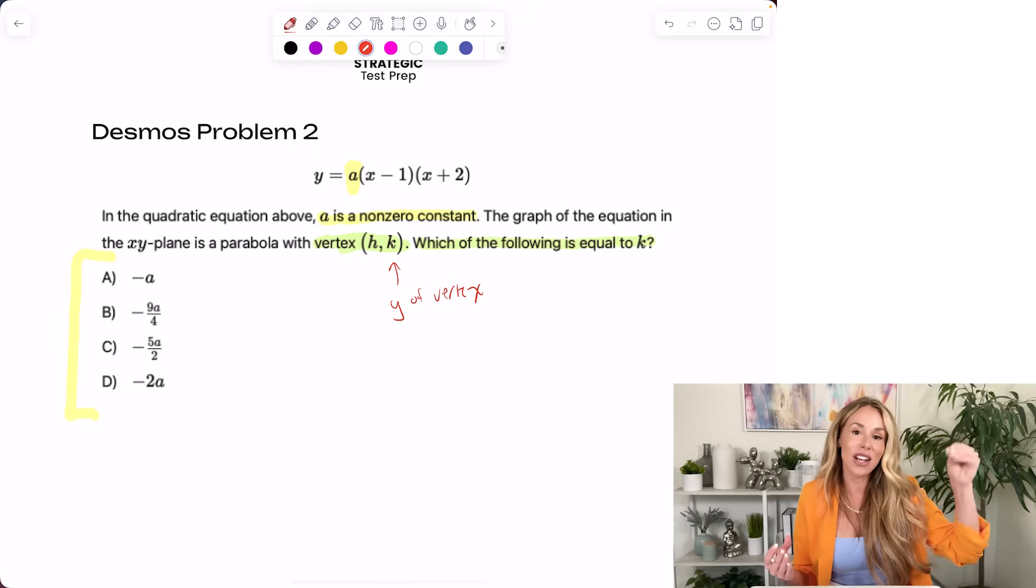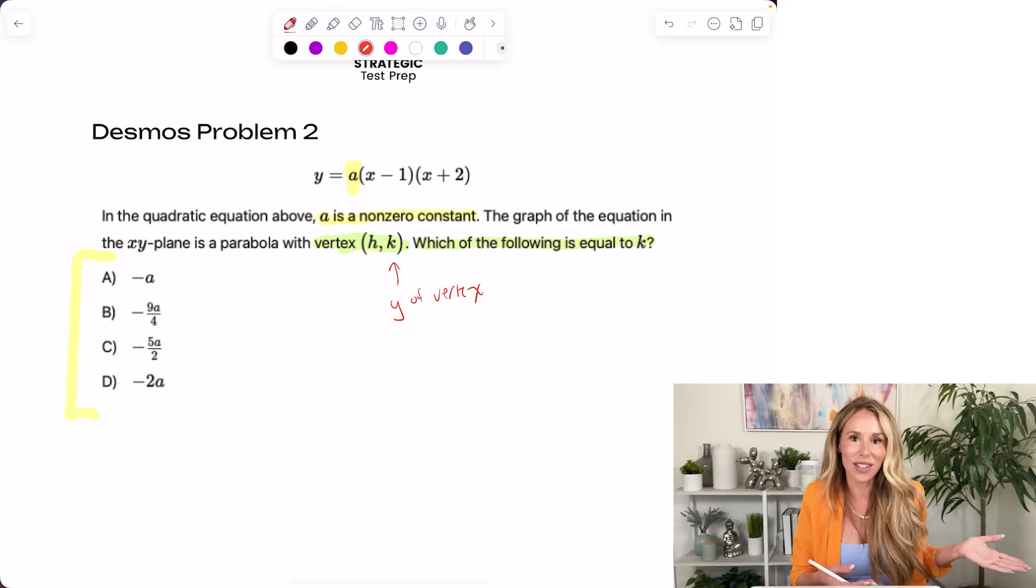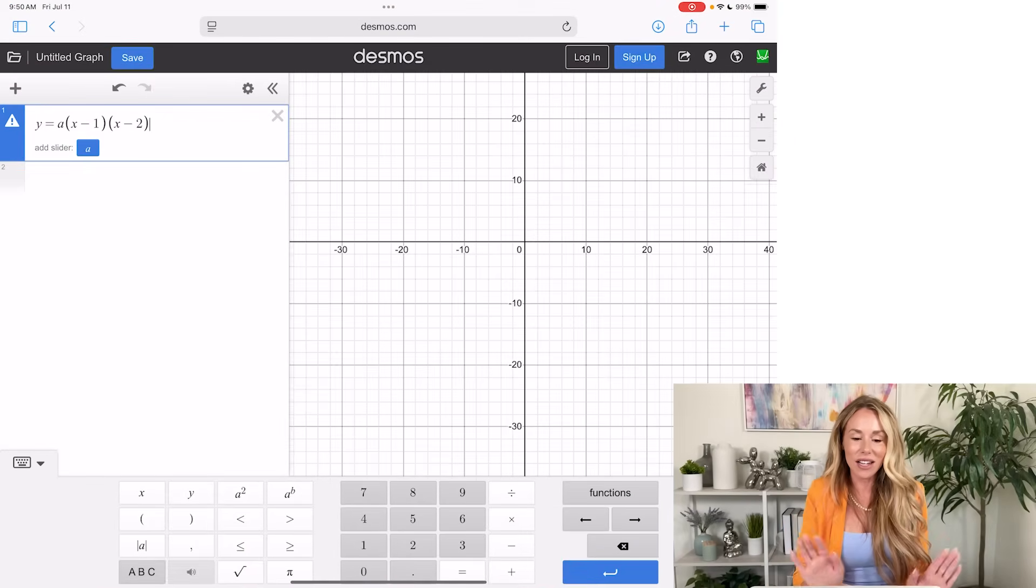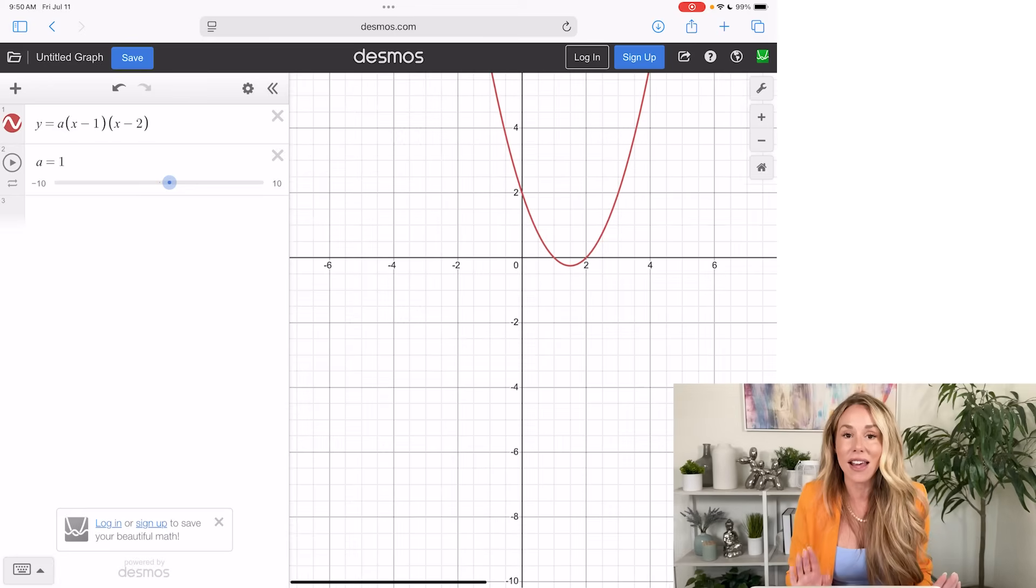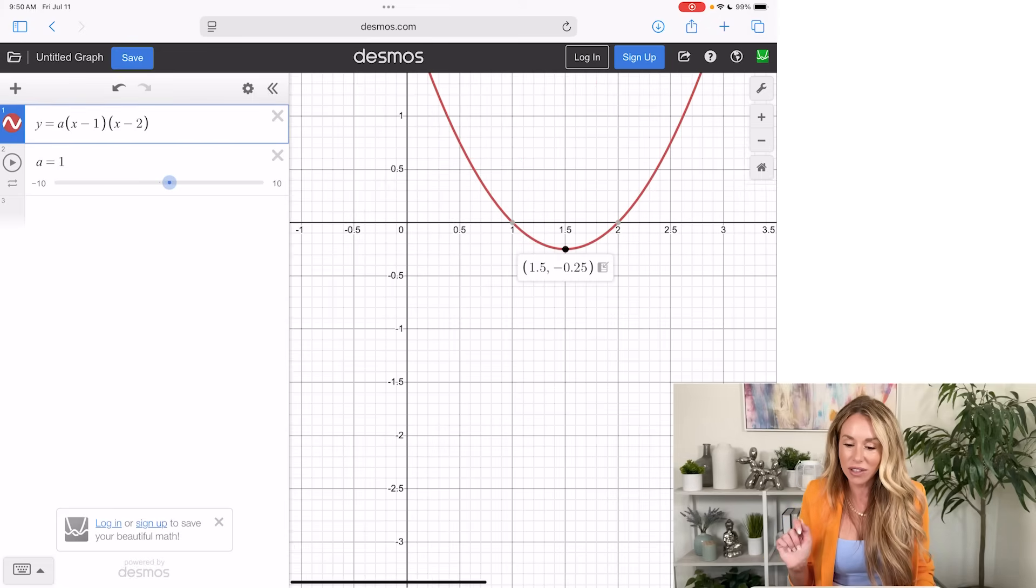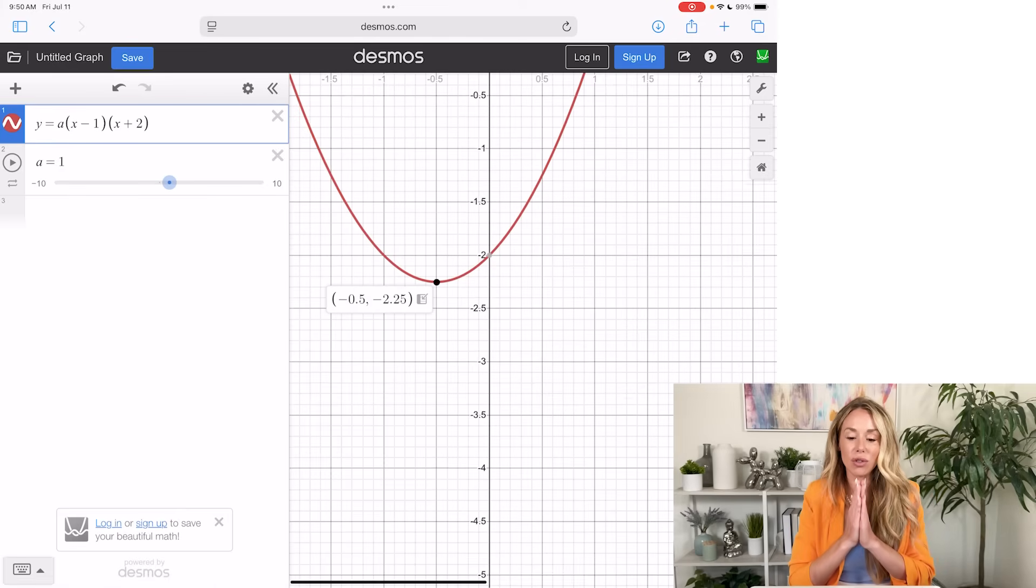So if you basically have all the answer choices still saying A, and they're just expressions, that means you can make A whatever you want. Because when A changes, your vertex will change as well. But then whatever you make A, you're going to put it in all the answer choices until it matches the vertex when A is that value. Let me just show you. I hope that's not too confusing. So as you can see, I just typed it in. I'm going to add my slider. I want to zoom in. I really like keeping A as one, because then it's just easy to work with when I plug one into all the answer choices. And I'm looking for the vertex. And it looks like the, oh, hang on, I got to change this to a plus. Okay.